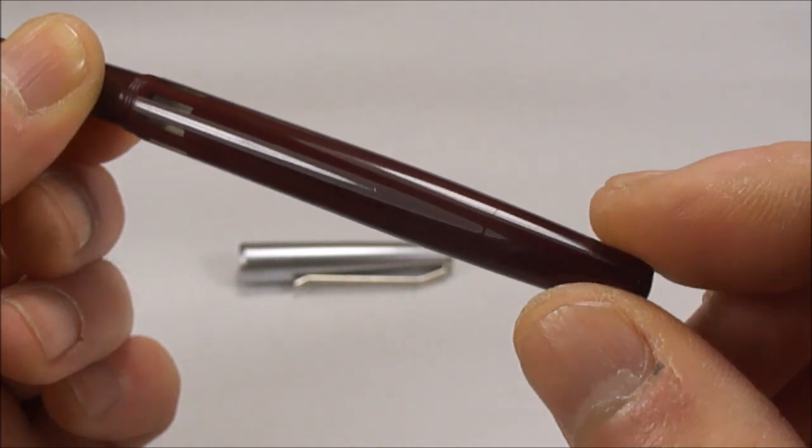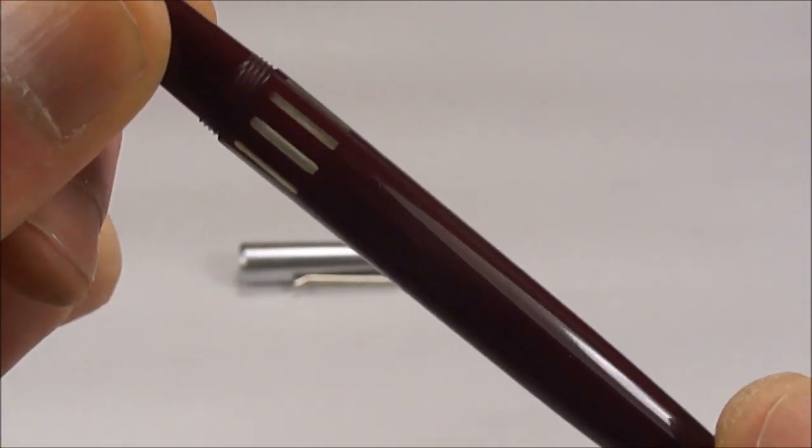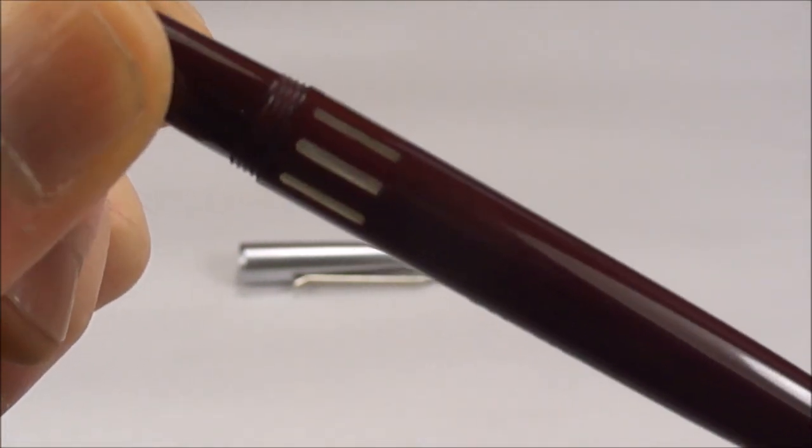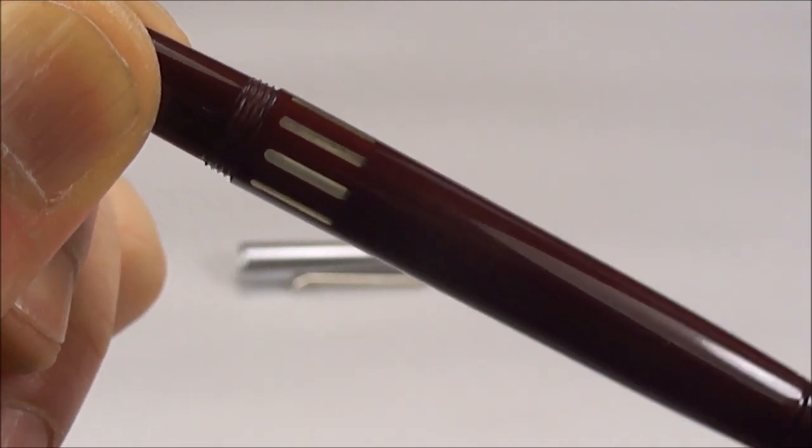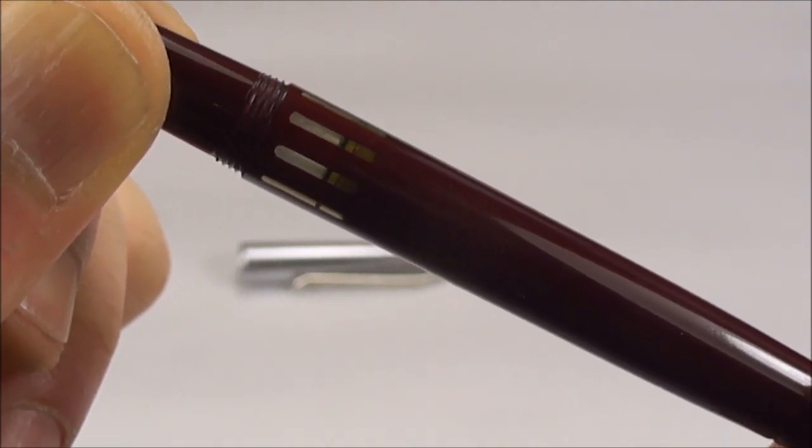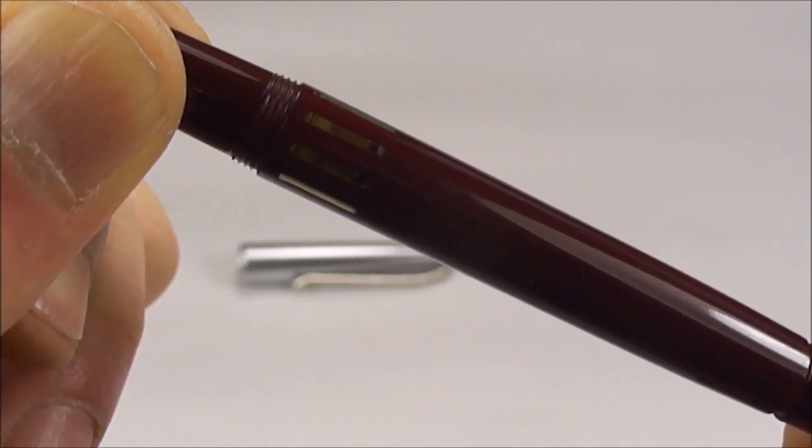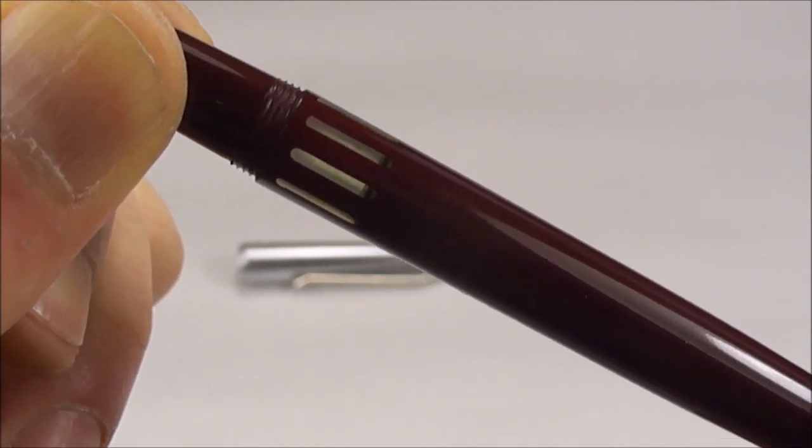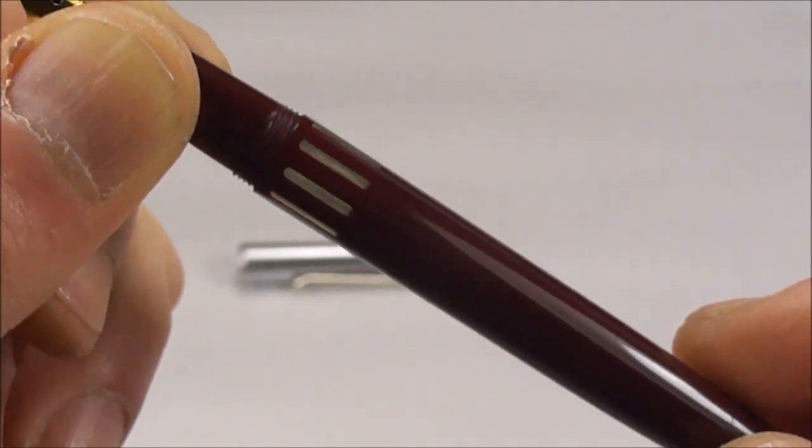So basically what we mean by piston filler is we unscrew the blind cap here. Now if we do that, let's see if we can actually see the piston. If you keep an eye on the ink view area there, as I turn the end of the cap there, you can see the piston going all the way to the top. And then if we turn it the other way, you can see it now goes back down into the barrel.